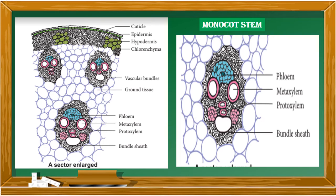The third layer is the ground tissue — a mass of undifferentiated tissue. Normally ground tissue should be differentiated into endodermis, cortex, pericycle, and pith, but in the monocot stem, looking at the anatomy, you won't be able to find where the endodermis, cortex, pericycle, or pith is. So it is an undifferentiated ground tissue made up of parenchyma cells.